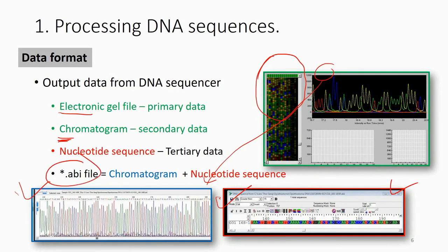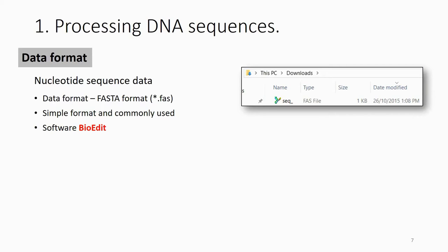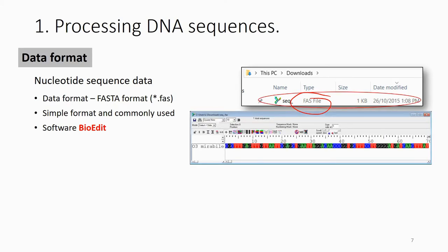After making corrections, you save the sequence as a FASTA file (.fas). Sequences you download from GenBank are FASTA files — they don't show the chromatogram or peaks, just the sequence: A, T, C, G. You can use the software BioEdit — it's free. If you double click the ABI file in BioEdit, it will show you the chromatogram and the FASTA file at the same time.